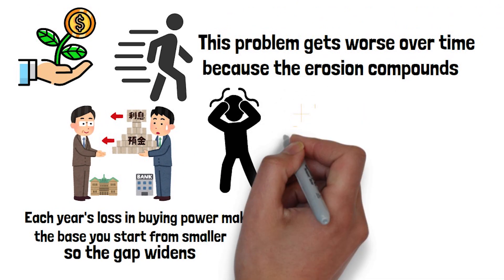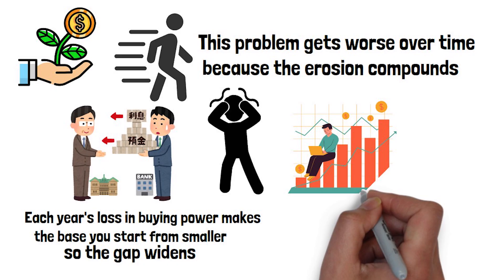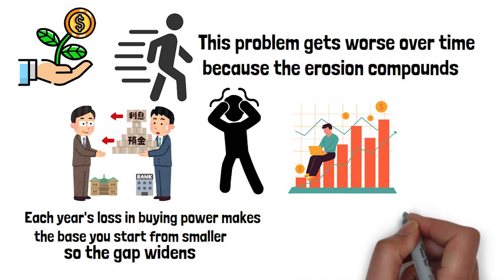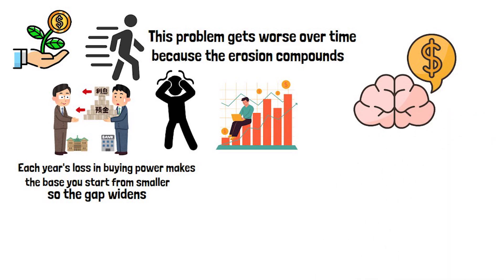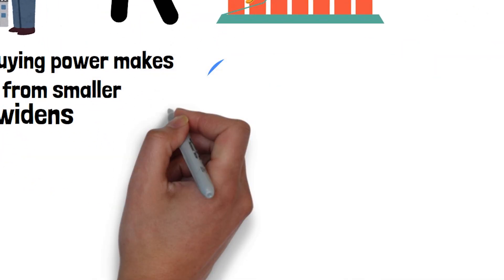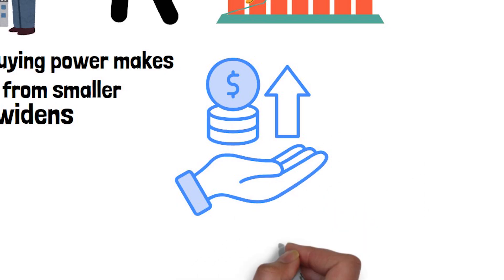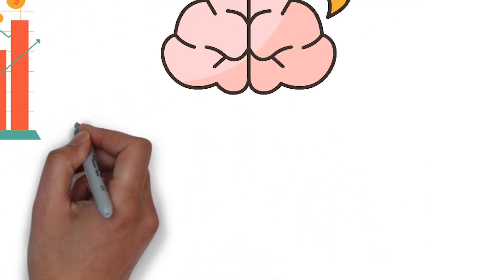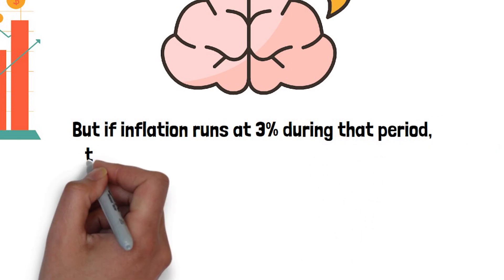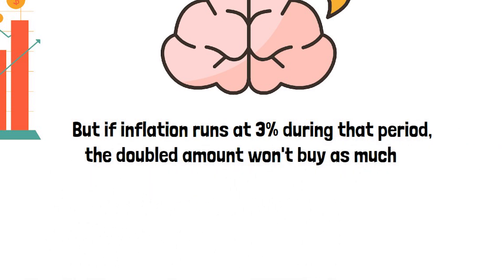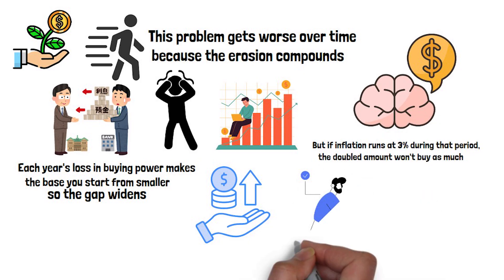After 10 years, a slow bleed of just a few percentage points can quietly strip away a large share of your money's real-world value. Now, think about this in terms of your savings doubling. At a 1% annual return, it would take about 72 years for your money to double in nominal terms. But if inflation runs at 3% during that period, the doubled amount won't buy as much. In fact, it may buy the same or even less than what you started with.